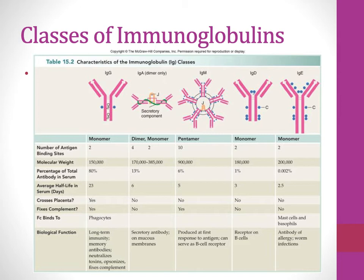After the initial IgM response, class switching occurs and you end up producing IgGs, which have higher affinity. IgGs can also activate complement and cause neutralization. They are found at higher percentages in circulation in the serum, can cross the placenta, and each class of antibody has its own important function. IgGs are really critical in clearing of pathogens and in long-term immunity.